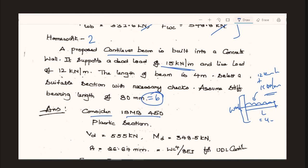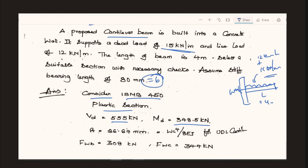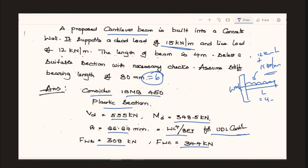MB 450 is sufficient for the given load and it is a plastic section. The design shear strength Vd is 3.5 kilonewton, and the design bending strength is 348.5 kilonewton. The deflection due to the UDL in the cantilever, wL⁴/8EI, is 26.67. fw is 3.308 and fwc is 344 kilonewton.